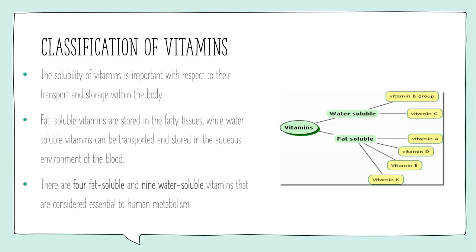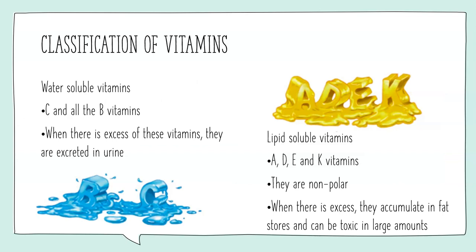There are four fat-soluble vitamins — A, D, E, and K — and nine water-soluble vitamins, many of which come under the vitamin B group. Water-soluble vitamins, which are vitamin C and all the B vitamins, are excreted through the urine when in excess. The fat-soluble vitamins A, D, E, and K are large non-polar molecules, and when there is excess that isn't used up in metabolic processes, they accumulate in fat stores. If they're not used, that accumulation can lead to toxic effects on biological processes and result in disease.